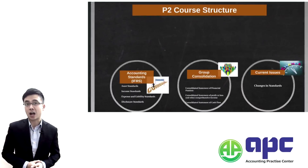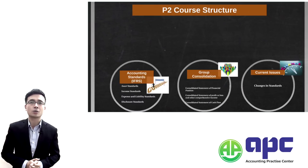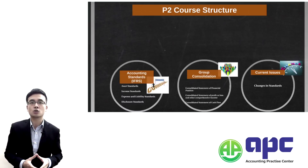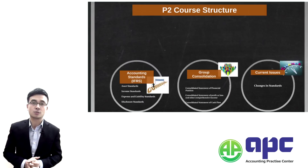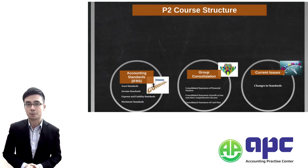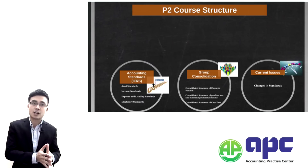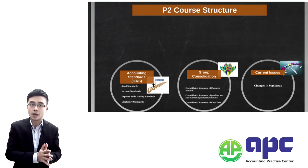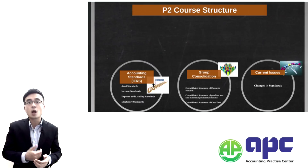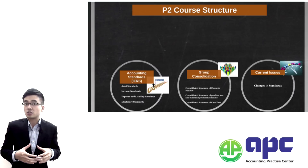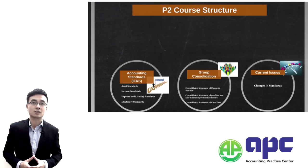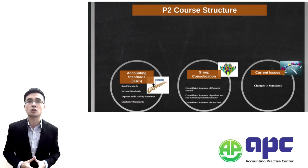First of all, we need to know our accounting standards really well so that we can quickly apply this knowledge into group consolidation and also a case study question, which is the examiner's favourite in Question 2 as well as Question 3. Accounting standards normally appear not only in Question 1 but also in Questions 2 and 3. The third component is that we need to know the current issues — the changes in accounting standards and how we adopt those changes to new scenarios.